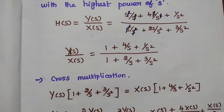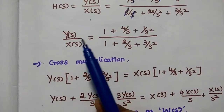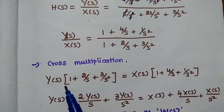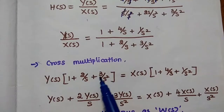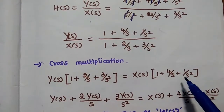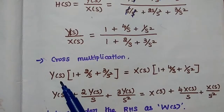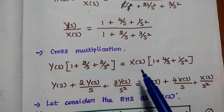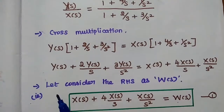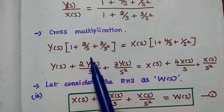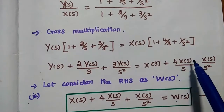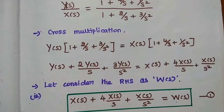After getting that, we have to cross multiply the values — the denominators. We can perform the cross multiplication. So, Y of S multiplied with 1 plus 2 by S plus 3 by S squared is equal to X of S multiplied with 1 plus 4 by S plus 1 by S squared. Then we multiply Y of S inside the bracket and similarly X of S inside the bracket. We get: Y of S plus 2Y of S by S plus 3Y of S by S squared is equal to X of S plus 4X of S by S plus X of S by S squared.